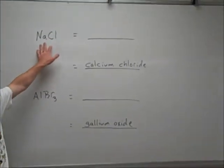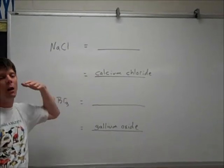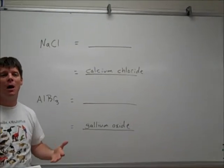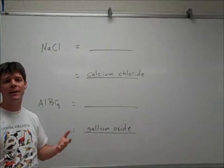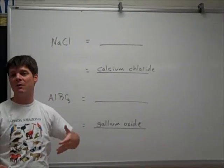So here we have the formula for a chemical compound. We see that the formula is NaCl. Now, we want to, from this information, be able to determine what's the name of this compound. So we look up Na on the periodic table, and we find that that is sodium. We look up Cl on the periodic table, and that's chlorine.